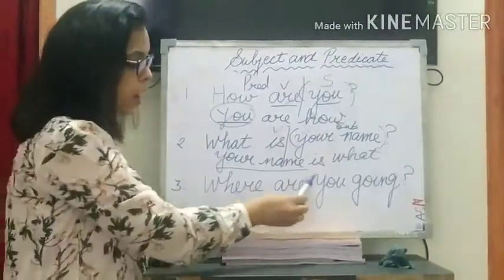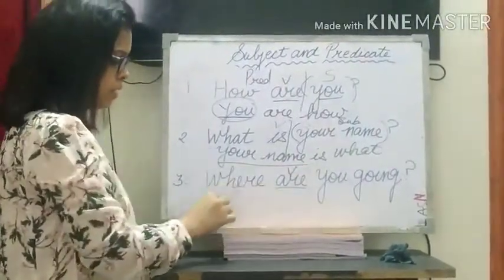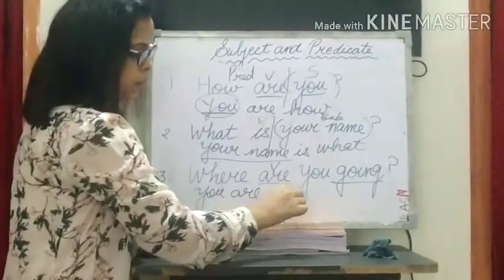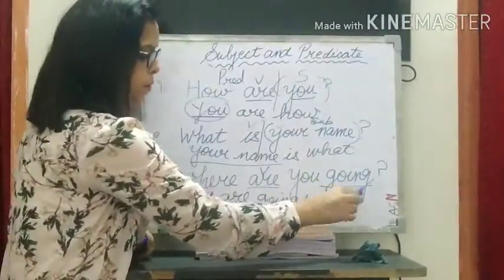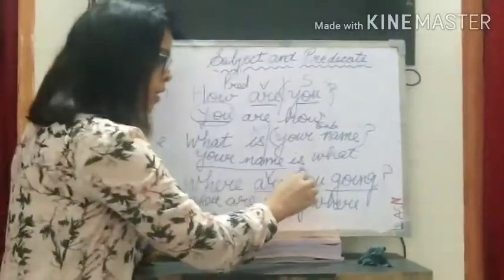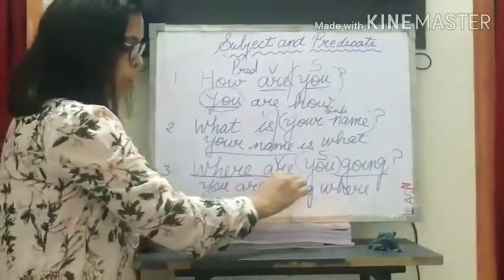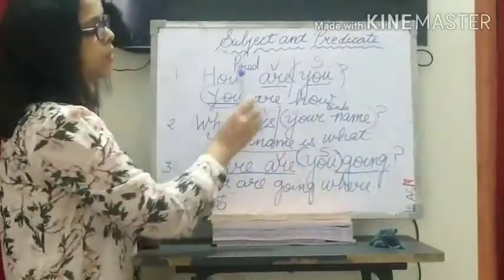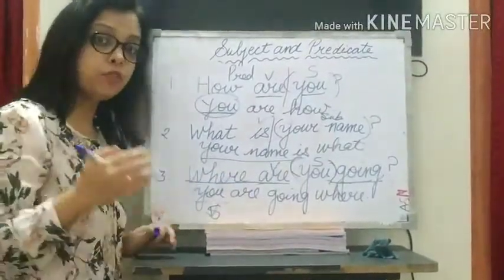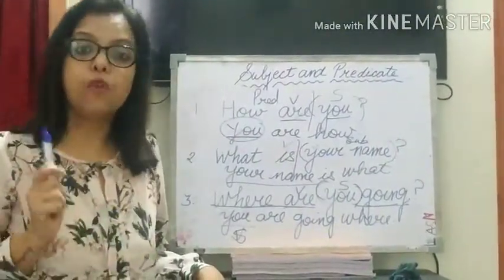Next example: 'Where are you going?' Let's rearrange it. The verb is 'are going', so rearranged: 'You are going where?' Now who are going where? The answer is 'you'. So 'you' is the subject. Here we see that the subject is coming somewhere in between the predicate — the predicate is 'what are going' and 'you' is the subject. Subject may come after the predicate or somewhere in the middle. Remember: subject always answers the question who or what followed by the verb.